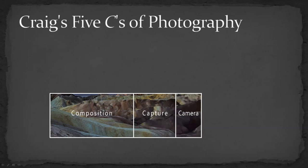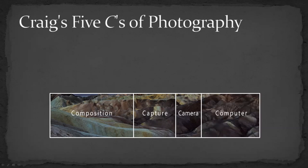The third C is the camera, and that's actually the least important of all the five C's. It does make some difference — you need an appropriate camera — but a better or worse camera won't necessarily make a big difference between a better or worse picture. Just don't tell my wife I said that. Next is the computer, meaning post-processing. Some people do a lot, some don't do any, but it can make a huge difference — certainly much more difference than the camera.